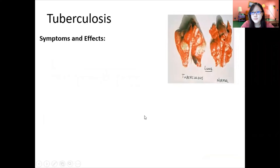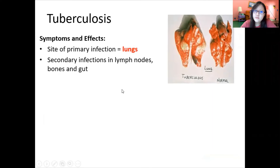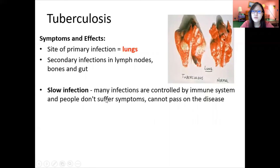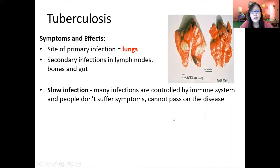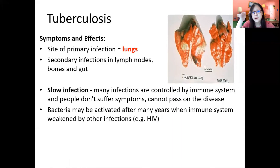TB primarily affects the lungs. Secondary infection can occur in lymph nodes, bones, and guts, so it can spread throughout the body. However, this is a very slow infection. Many infections are controlled by the immune system and people do not suffer symptoms. In fact, TB is very common — it's estimated that one in four people have TB in their lungs. It's usually controlled by the immune system, so you will not experience any symptoms and can rarely pass on the disease.